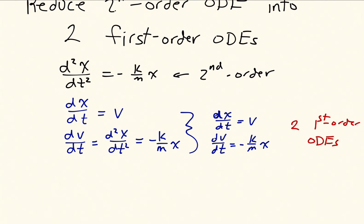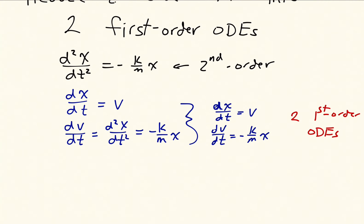So this is two first-order ODEs. And they're coupled through x and v. So it's a system of two ODEs. But we know how to solve a system of equations, so we can do that. For example, we could use the Euler update.